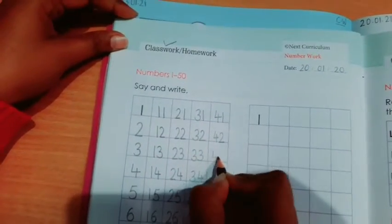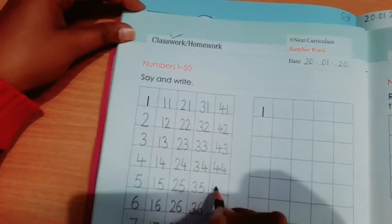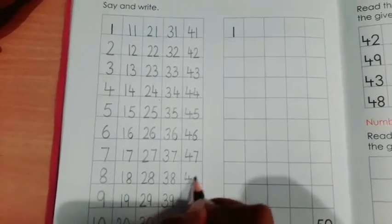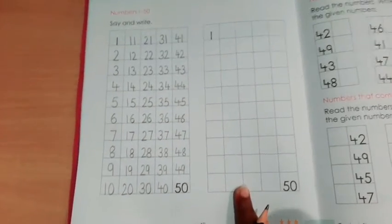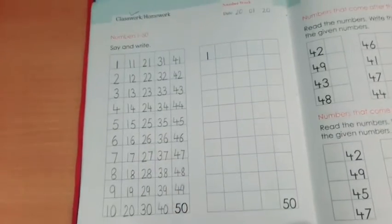41, 42, 43, 44, 45, 46, 47, 48, 49, 50. Okay students? In the same way you have to complete this portion. And make sure your each and every number should be touched to the bottom line. Okay? Thank you.